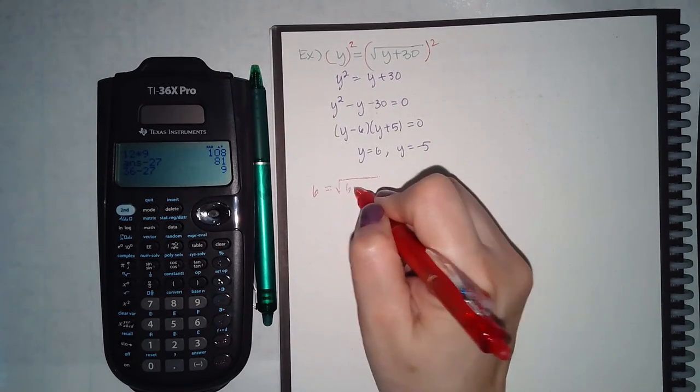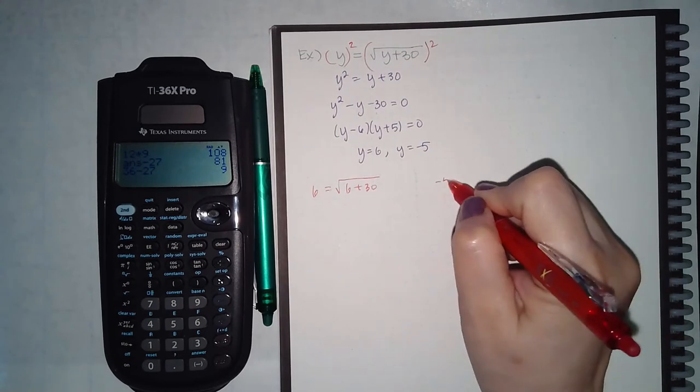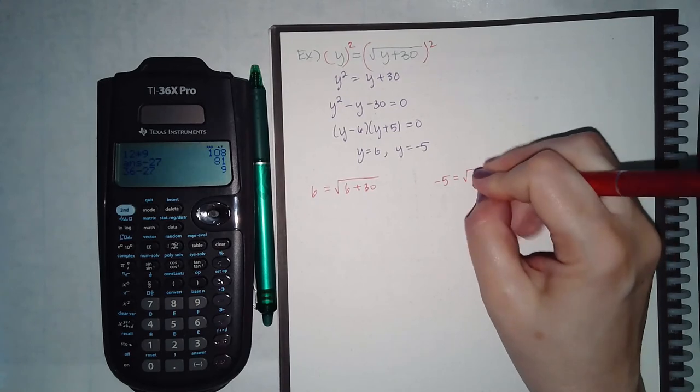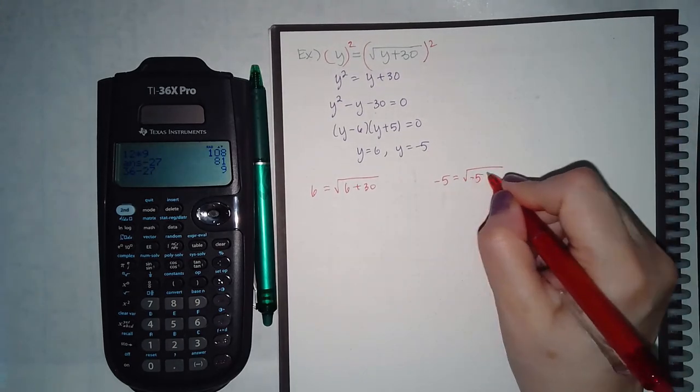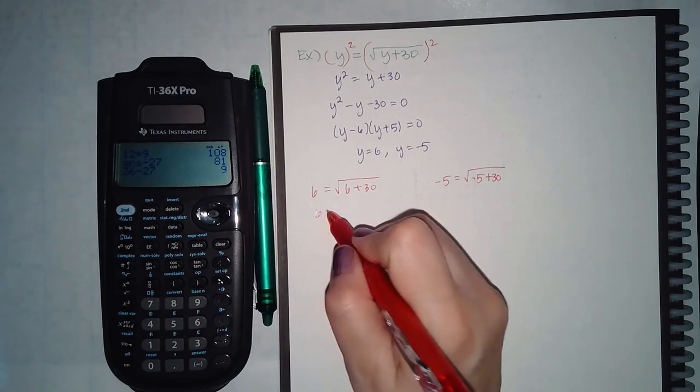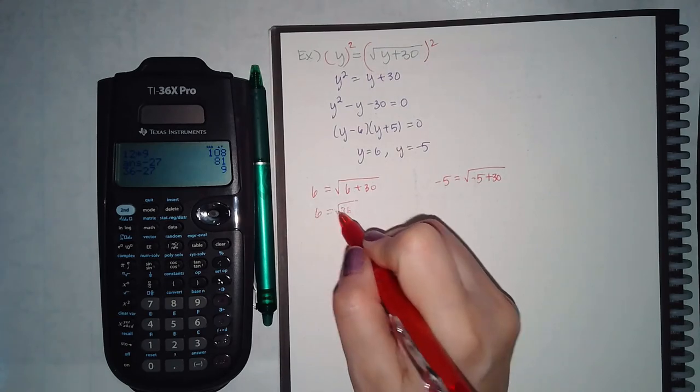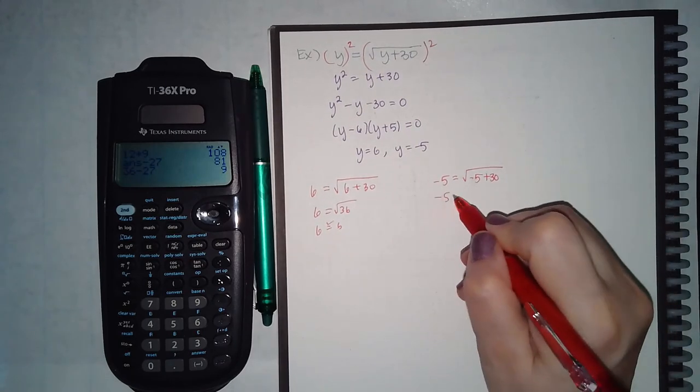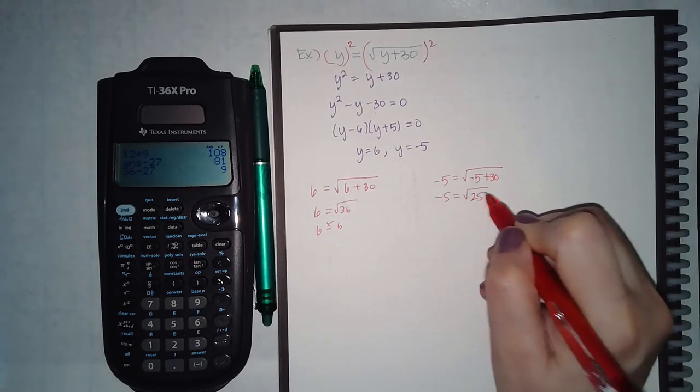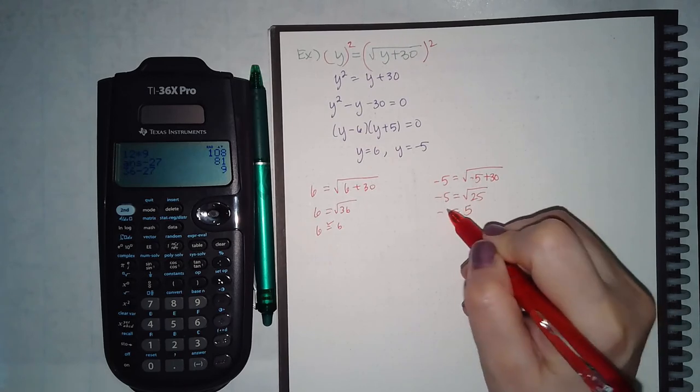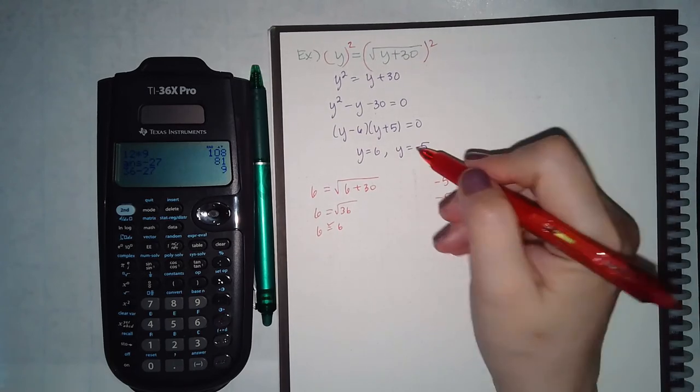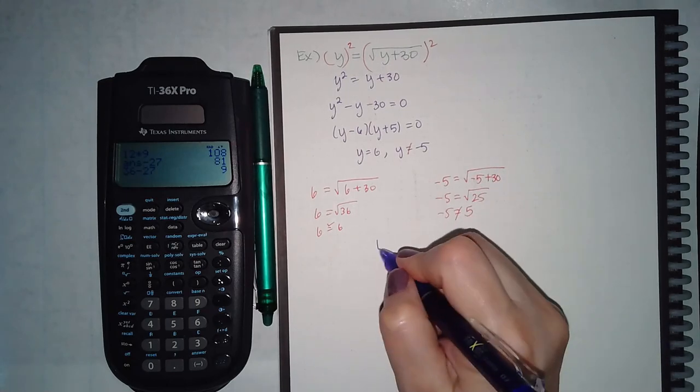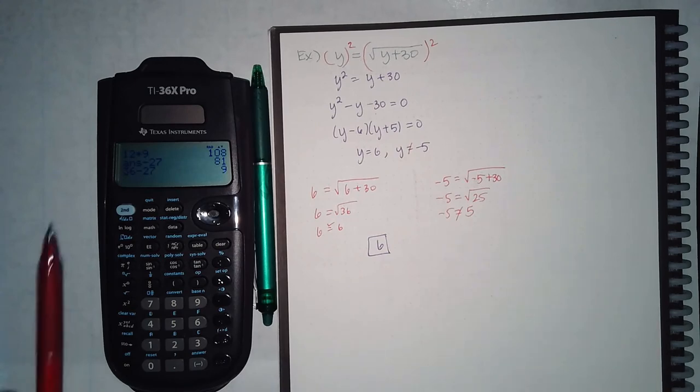So here we will get 36, and the positive square root of 36 is 6, so that one works. Here we get 25, and the positive square root of 25 is 5. These are not equivalent, so y equals negative 5 will not check out. Therefore, the only answer we have in this problem is 6.